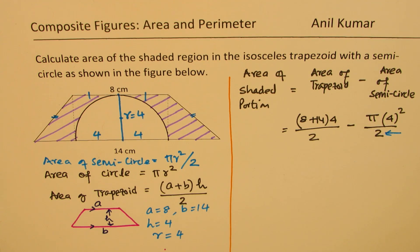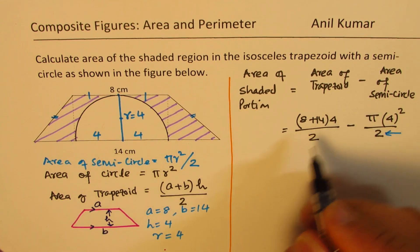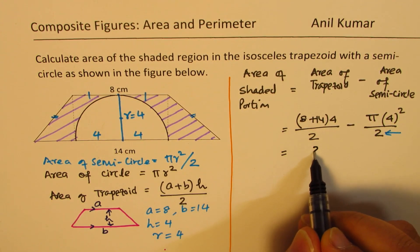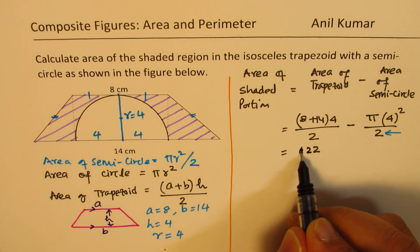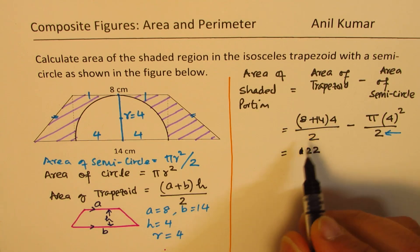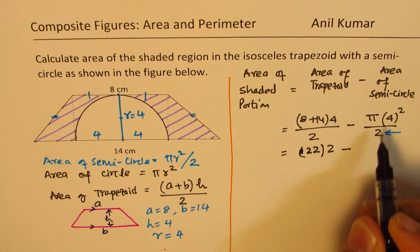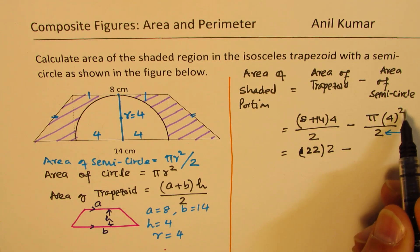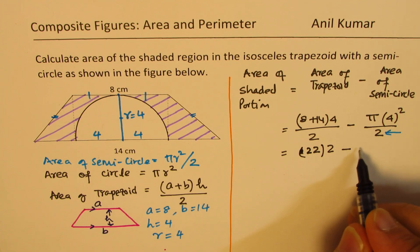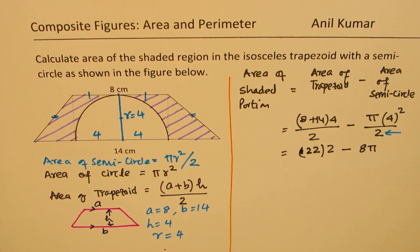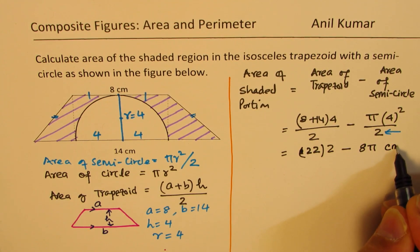Now we can just calculate the answer, right? So if you do simple calculations here, we get 8 plus 14 is 22. We are going to multiply this by 2. And then πR², 4² is 16 divided by 2 is 8 minus 8π. So that gives you the answer. And the units will be centimeters squared.